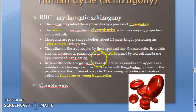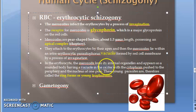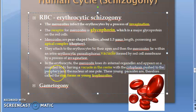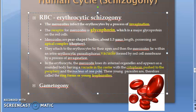Inside the RBC, the merozoite loses its internal organelles, appears rounded, develops a vacuole in the center, cytoplasm is pushed to the periphery, and the nucleus is at one pole — so it looks like a ring.